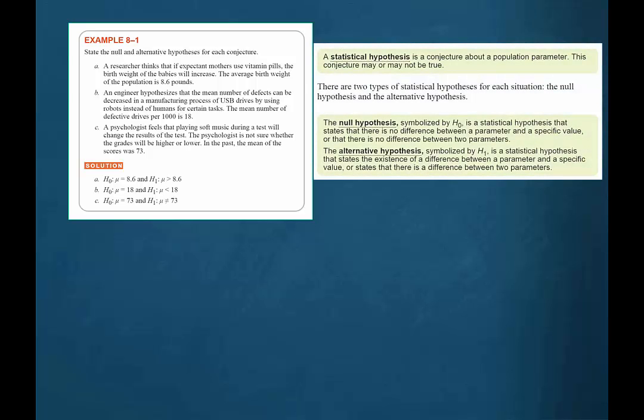The textbook defines a statistical hypothesis as a conjecture about a population parameter. This conjecture may or may not be true. The null hypothesis is a statistical hypothesis that states that there is no difference between a parameter and a specific value, or that there is no difference between two parameters.